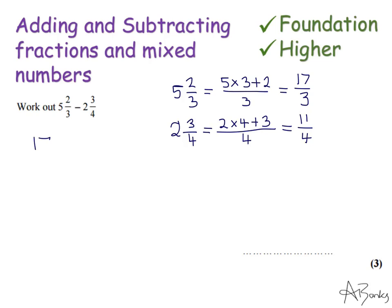So I'm just going to rewrite this question out, but I'm going to write it with my improper fractions. So it's 17 thirds take away 11 quarters. So this time, my common denominator is going to be 12. There's no smaller number I can use, so I'm going to rewrite these with a 12 as the denominator. To change the 3 into a 12, I was multiplying by 4, so I'm going to have to do 17 times 4, which is 68.